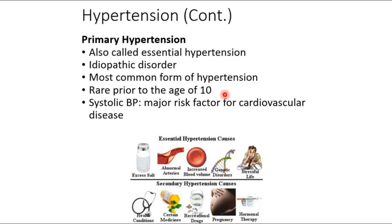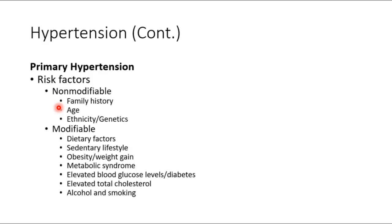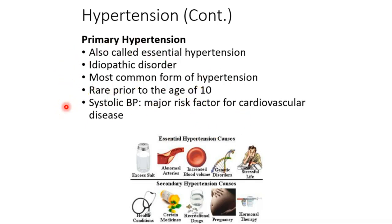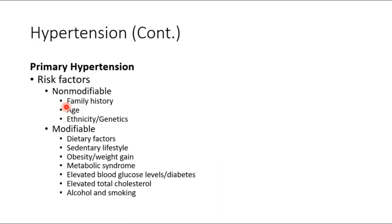Regarding obesity: researchers are looking for genetic and environmental factors beyond personal behavior — it's really not solely people's fault when they're overweight. However, there are adverse health outcomes with obesity regardless of cause. Non-modifiable risk factors for primary hypertension include family history, age, genetics, and ethnicity.